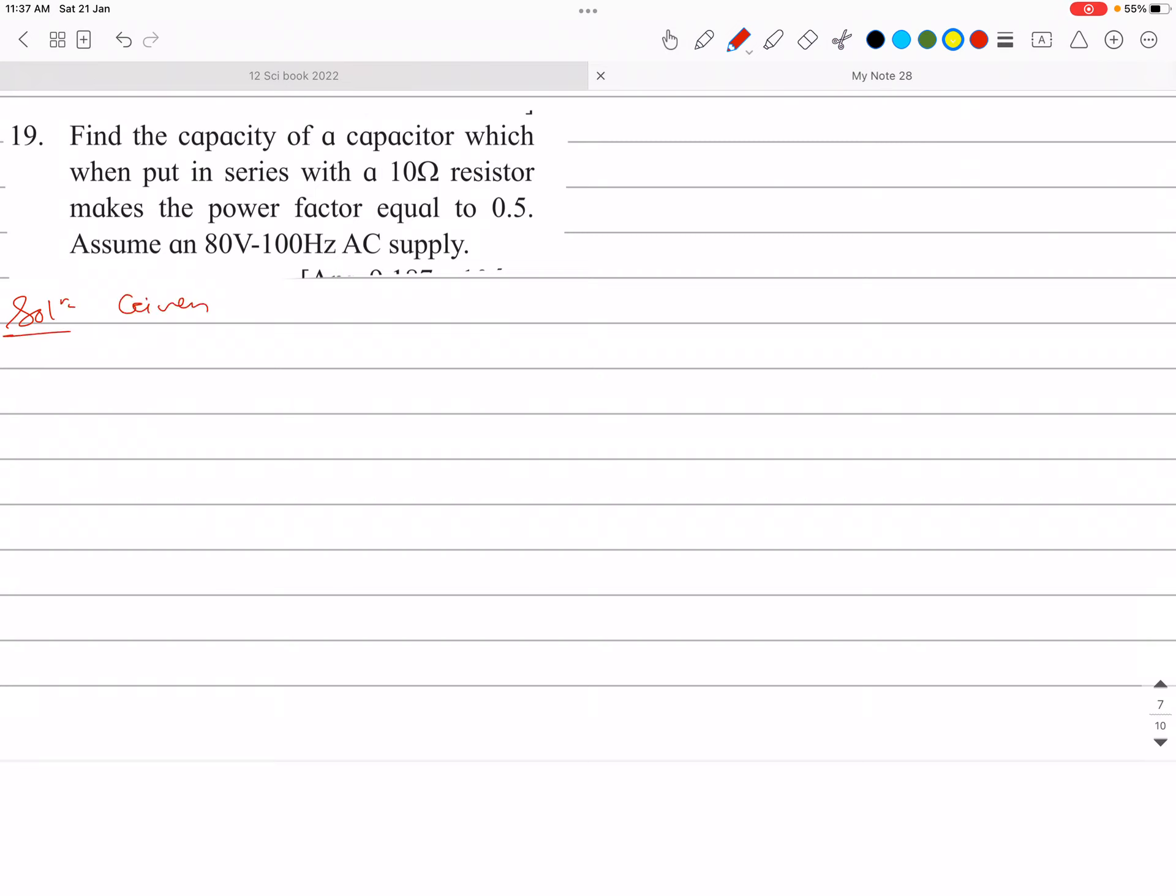Find capacity of capacitor which when put in series with 10 ohm resistor. So R is 10 ohm. Makes the power factor equal to—